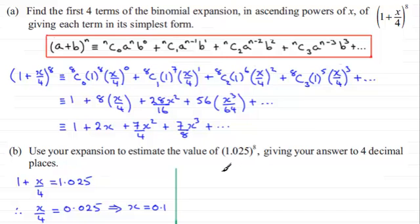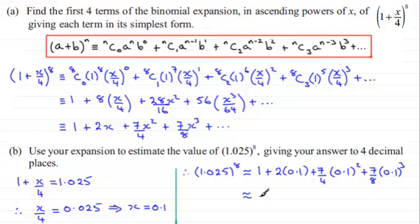And so what does that mean? Well, essentially then, all we've got to do is just substitute this value of x into here. So we've got, therefore, 1.025 to the power 8 is going to be approximately equal to 1 plus 2 times 0.1, then we've got plus 7 over 4 multiplied by 0.1 all squared, and then plus 7 over 8 multiplied by 0.1 all cubed. And if you put this through your calculator, what you should find that you get is 1.218375. And we're asked to give this to four decimal places. So what we've got here is that this comes to 1.2184 to four decimal places.